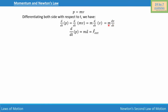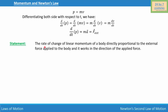So basically what we are doing, we are writing mass times acceleration, which is over here. And we know that mass times acceleration is F external. So basically, there is a relation between change in linear momentum and external force, and they are also related to mass times acceleration. Now let's make a statement: the rate of change of linear momentum of a body is directly proportional to the external force applied to the body, and it acts in the direction of the applied force.